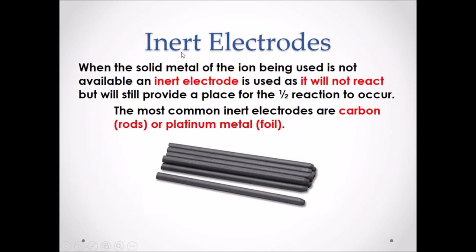Inert electrodes. When the solid metal of an ion being used is not available, an inert electrode is used — it will not react, but will still provide a place for the half reaction to occur. The most common inert electrodes are carbon rods and platinum metal. Notice that carbon and platinum are not found in the Chemistry 30 data booklet, and therefore will not participate in a half reaction.